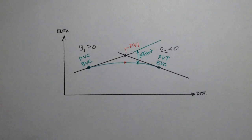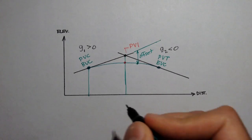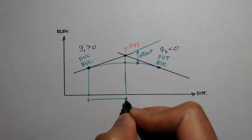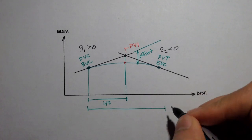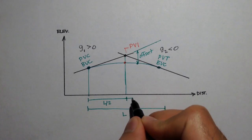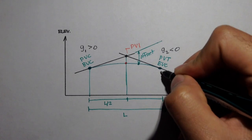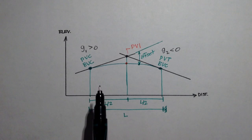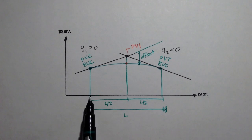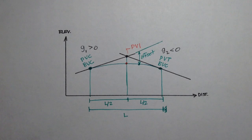The distance between BVC and PVI is L over 2, where L is the total length of the curve from BVC to EVC. The distance from PVI to EVC is also L over 2. So the length of the curve is the distance from BVC to EVC, the distance from BVC to PVI is L over 2, and the distance from PVI to EVC is also L over 2.